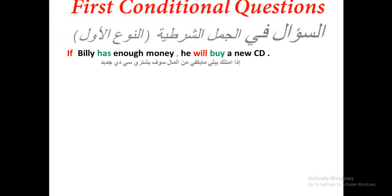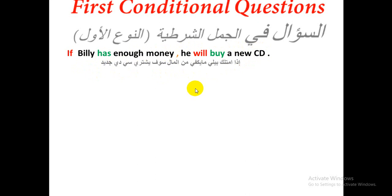First conditional question. Let's take an example: 'If Billy has enough money, he will buy a new CD.' How do you make a question? We start with 'will' and change the order of 'will' and the subject. The subject is Billy. So: 'Will Billy buy a new CD if he has enough money?'